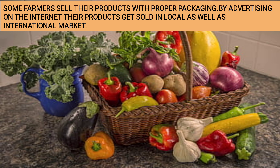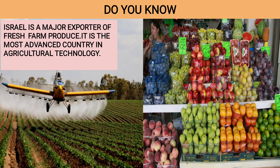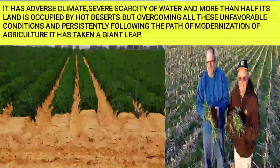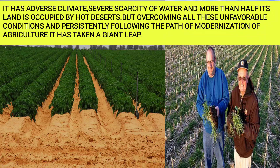A good example is Alphonso Mango. Israel is a major exporter of fresh farm produce and is the most advanced country in agricultural technology. It has adverse climate, severe scarcity of water, and more than half its land is occupied by hot deserts. But by overcoming these unfavorable conditions and persistently following the path of modernization of agriculture, it has taken a giant leap — it is number one in fresh farm produce because of its use of new technology.